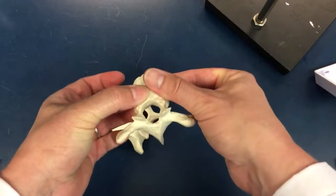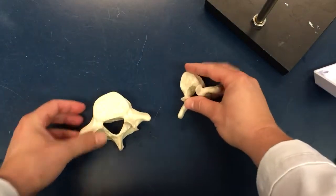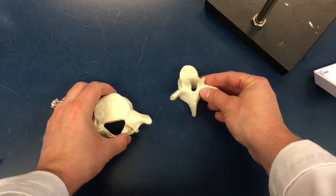This thick solid part is the body. This one also has a body, and those are the markings that you need to know on these two vertebrae.